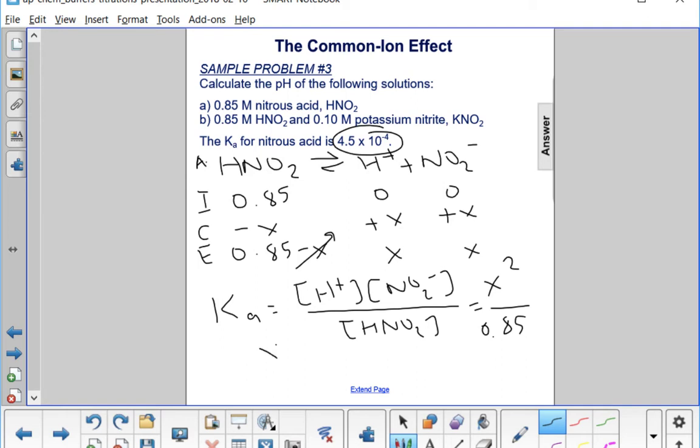You can solve for x there and get 0.0196. And what does x represent? It represents both the H+ and the NO2- concentration. So I can take the negative log of this, get a pH of 1.71. That's part a - the pH is 1.71. I'm going to clear some space here and do part B on the same slide.